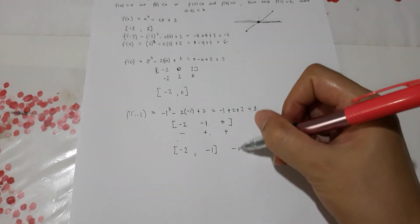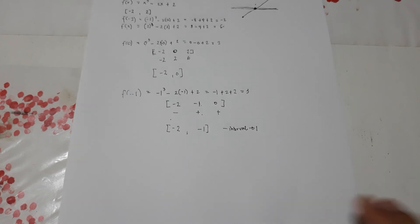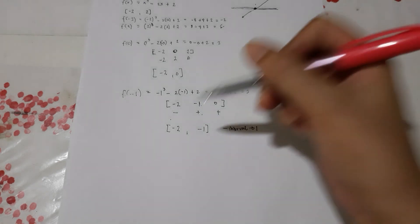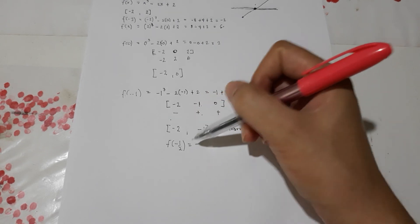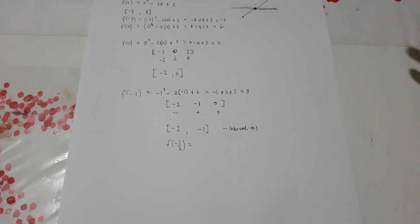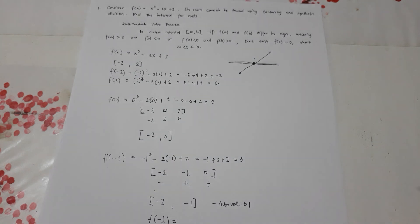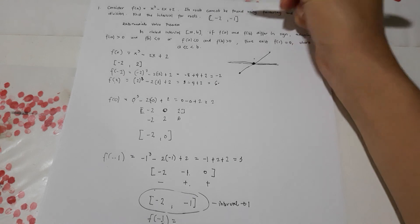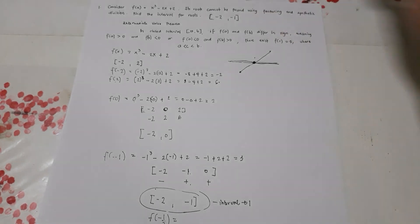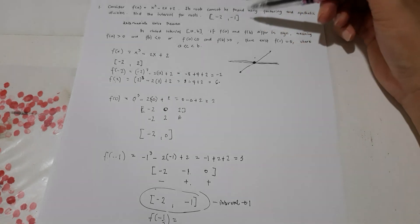We can make the interval even smaller — for example evaluating f(-1.5) — and keep narrowing down until you identify the root precisely. However, since the problem asks only for the interval of the root, the answer is the interval from -2 to -1, which has a length of 1.